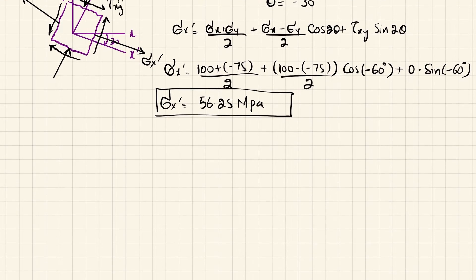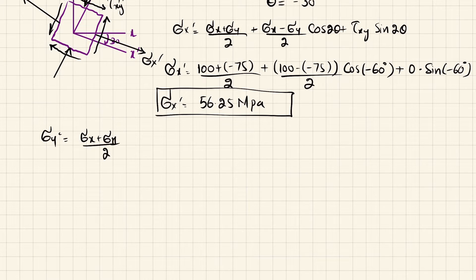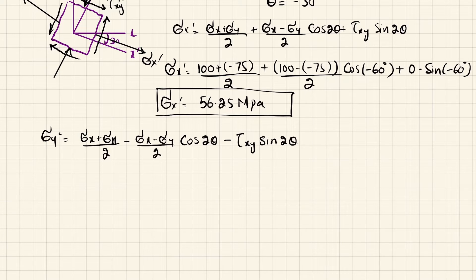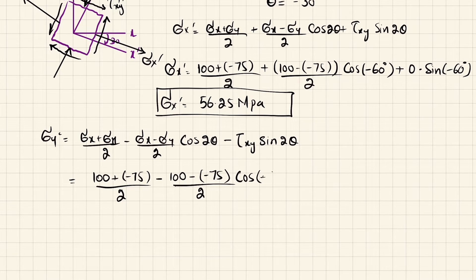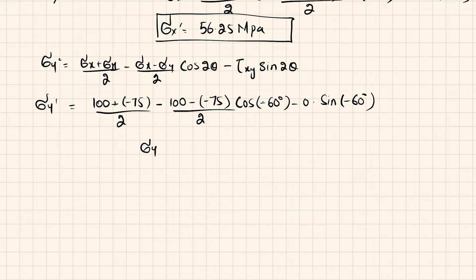Now for sigma y dash: sigma y dash equals (sigma x plus sigma y) divided by 2, minus (sigma x minus sigma y) divided by 2 times cos(2 theta), minus tau x y times sin(2 theta). Substituting 100 plus minus 75 divided by 2, minus 100 minus minus 75 divided by 2 times cos(minus 60 degrees), with tau x y equal to 0, gives sigma y dash equal to minus 31.25 MPa.